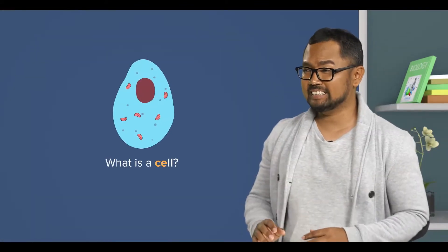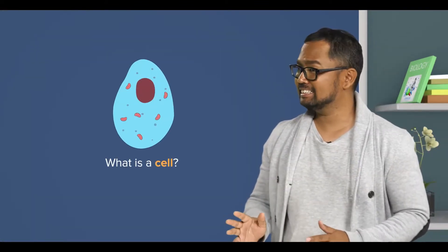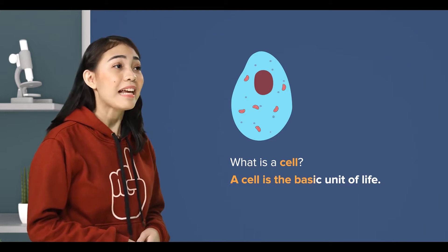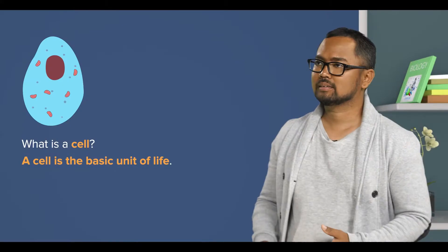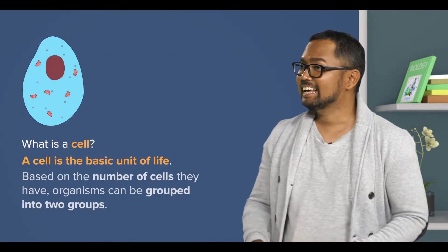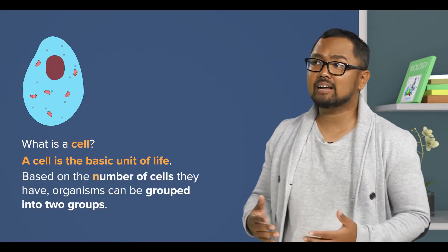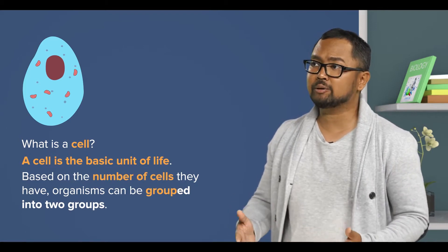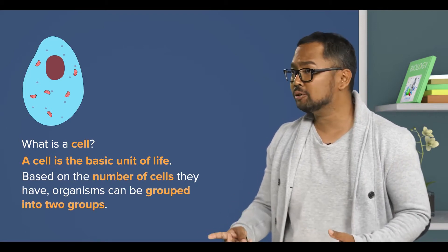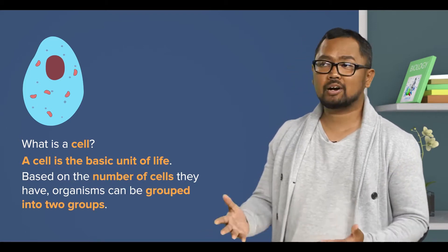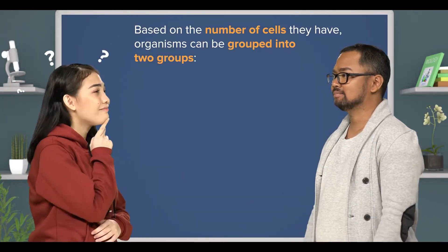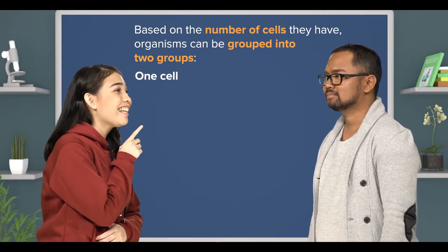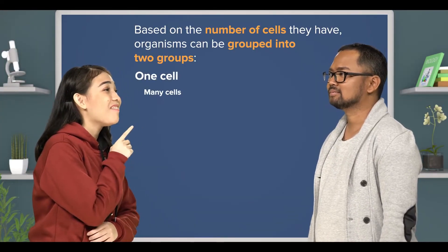But you know what a cell is, yes? A cell is the basic unit of life. And based on the number of cells they have, organisms could be grouped into two groups. What are they? One cell and many cells?